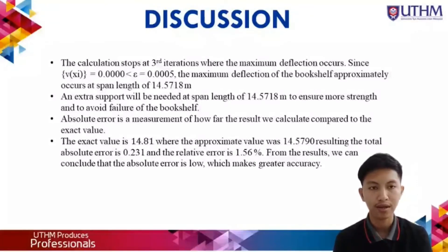Absolute error is a measurement of how far the results we calculate compare to the exact value. The exact value is 14.81, and the approximate value was 14.5790, resulting in a total absolute error of 0.231 and relative error of 1.56%. From the results, we can conclude that the absolute error is low, which makes greater accuracy.